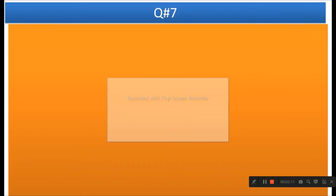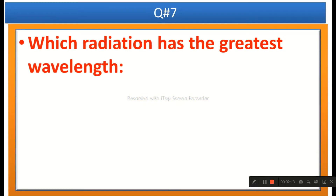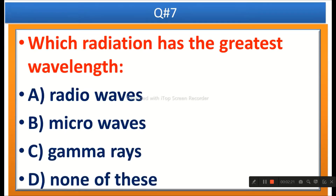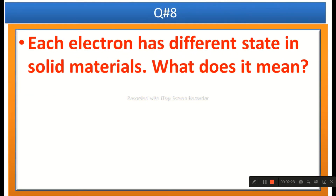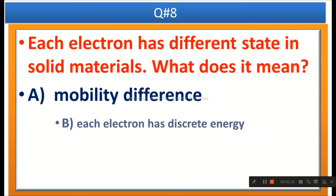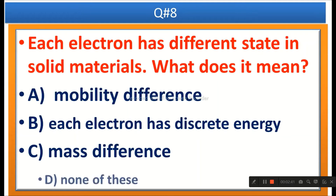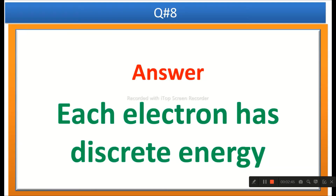The next question: Which radiation has the greatest wavelength? Options are radio waves, microwaves, gamma rays, or none of these. The right answer is radio waves. The next question: Each electron has a different state in solid materials — what does it mean? Options are mobility difference, each electron has discrete energy, mass difference, or none of these. The right answer is each electron has discrete energy.